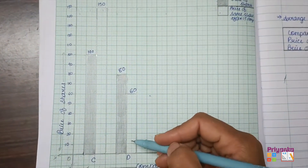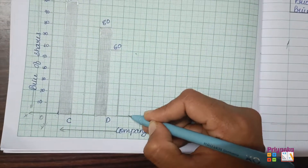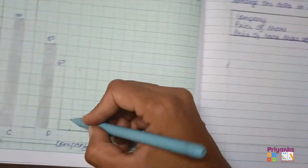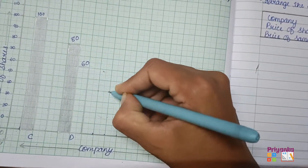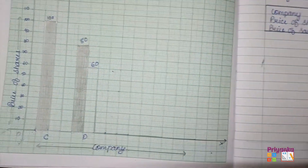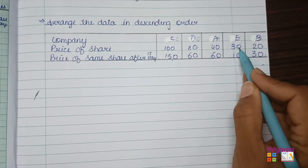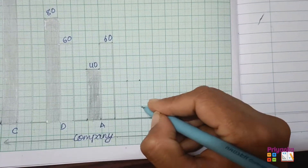Company D is shown with the shaded and blank bars. Next is Company A, where the price of a share is 40 and after 15 days is 60. Keep some distance, then draw the shaded bar till 40 and the blank bar till 60. Moving to Company E: the price is 30 and after 15 days it is 10, so draw till 30 and 10 respectively.